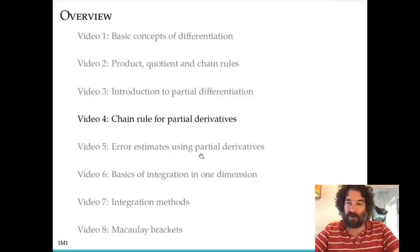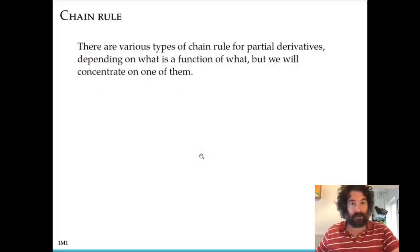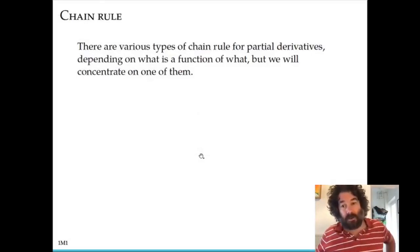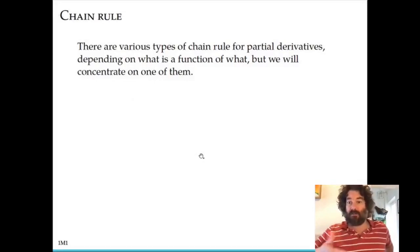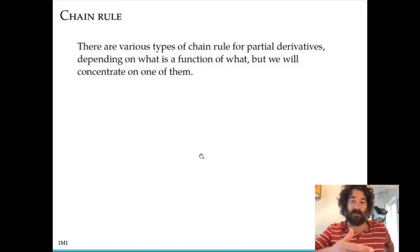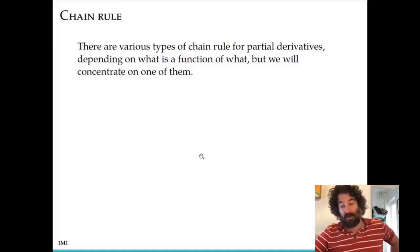Hello and welcome to the fourth video on calculus. In this video I'm going to discuss the chain rule for partial derivatives, and we're really just going to look at one particular case. You can imagine there are lots of different cases depending on what is a function of what. So you could have a function of say two variables, and then each of those variables could be functions of a certain number of variables, giving rise to different versions of the chain rule.